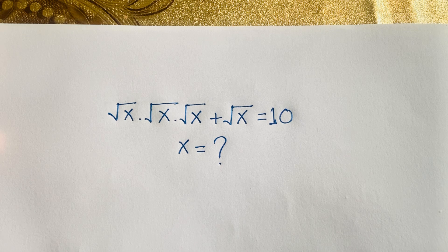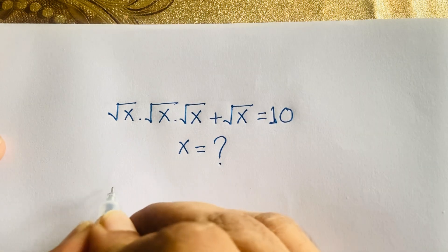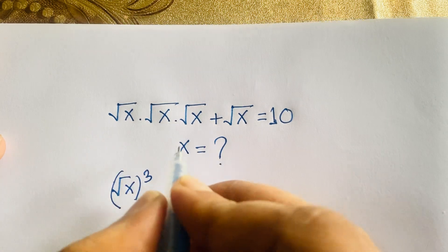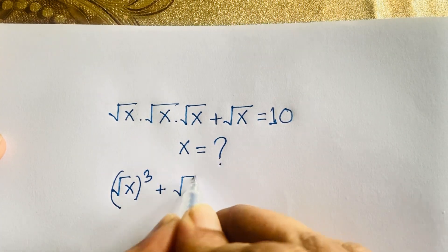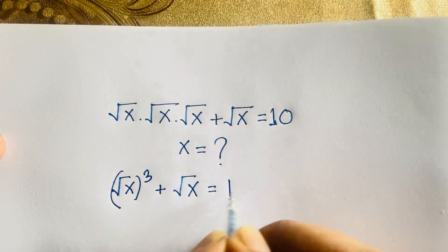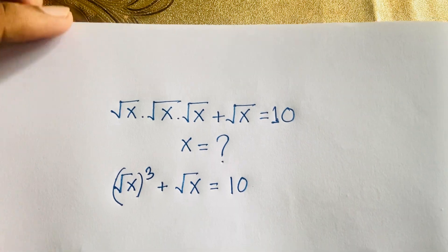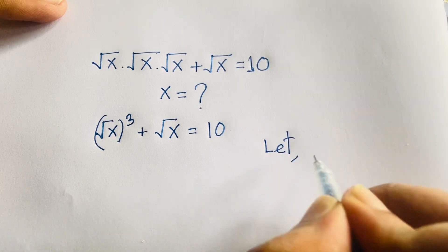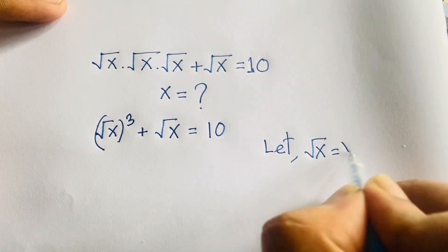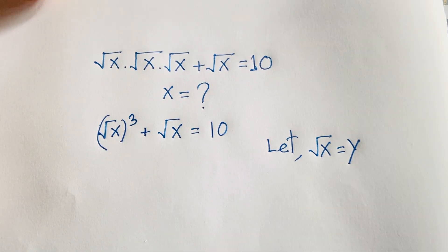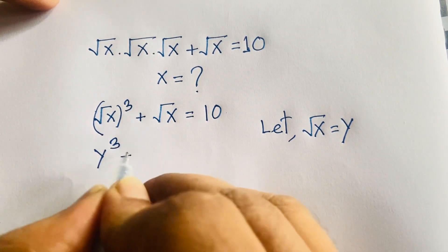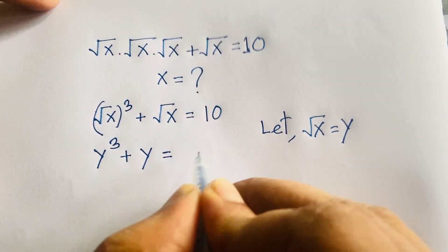So how do we solve this algebraically? We can write the expression as (√x)³ plus √x equals 10. Now let √x equal y, so this becomes y³ plus y equals 10.